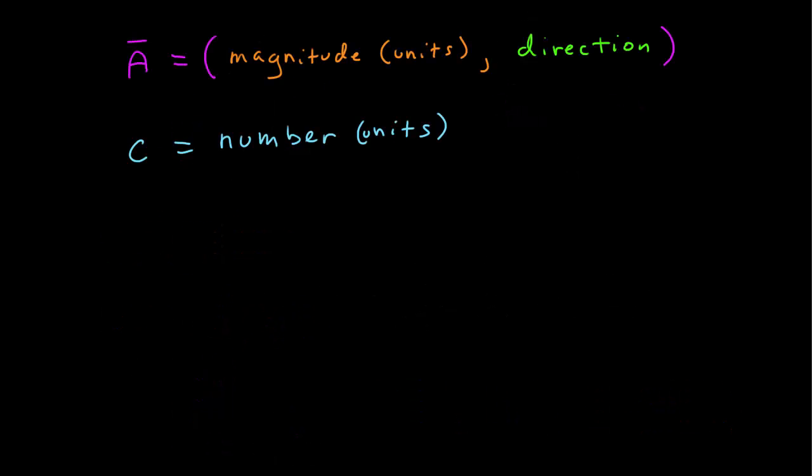In summary, a vector will have a magnitude that describes the amount of the vector, and the magnitude has the units and is always positive. And it has a direction. Where a scalar is just a number that may be positive or negative, and may have units as well.